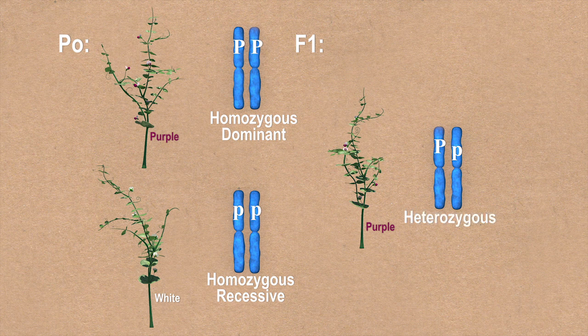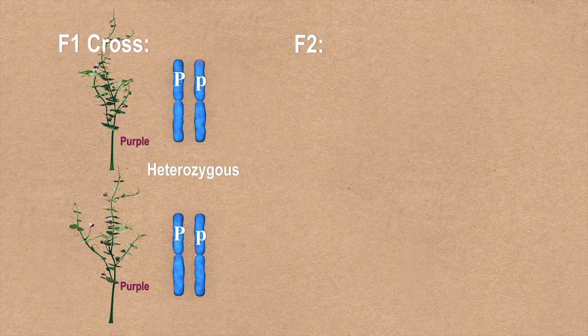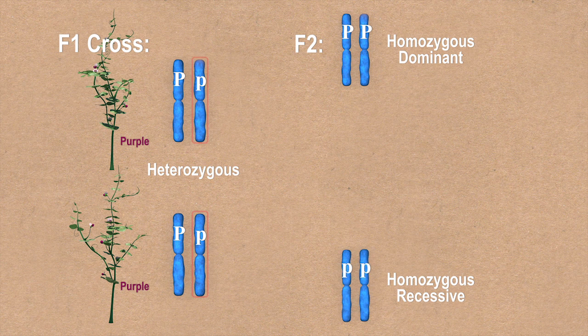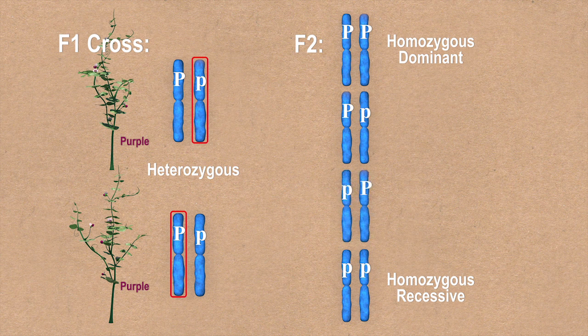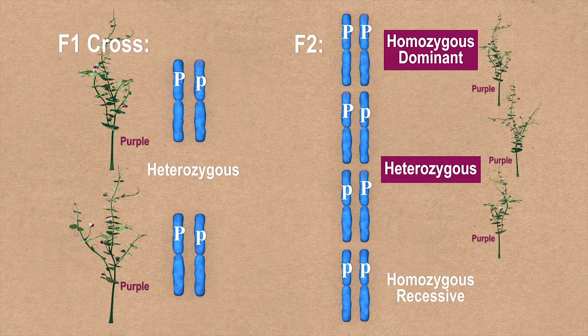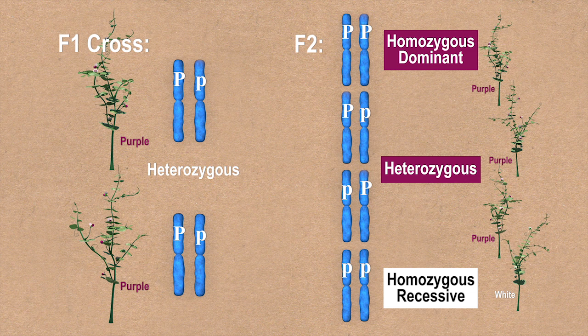The F1 heterozygotes in this cross will appear dominant because they received one dominant allele from the homozygous dominant parent. In the F1 cross, both parents are heterozygous, so progeny have the possibility to be homozygous dominant, homozygous recessive, or heterozygous by two different combinations of alleles. The homozygous dominant and heterozygous progeny will express the dominant trait, and the homozygous recessive will appear recessive. These combinations of alleles explain the 3 to 1 ratio typically seen in the F2 generation.